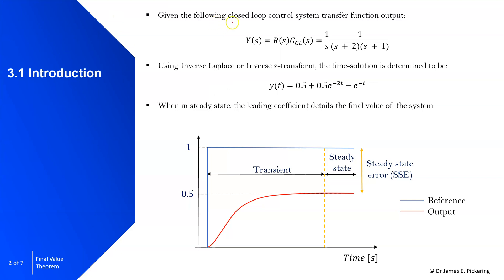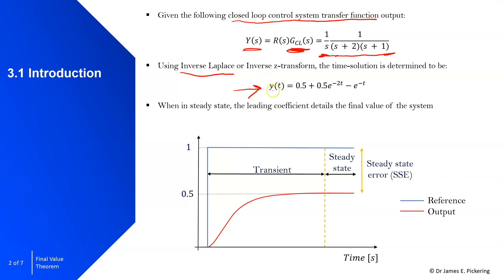Recalling back from continuous time modeling: for a closed loop control system the transfer function g subscript cl gives output y of s equal to r of s multiplied by that transfer function. A typical example uses a unit step input for r of s and a second order transfer function for g subscript cl. Taking the inverse Laplace of this gives the time domain solution. Alternatively in the discrete time domain we could undertake an inverse z-transform to get back to the time solution.